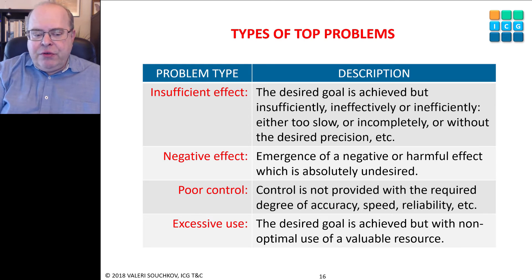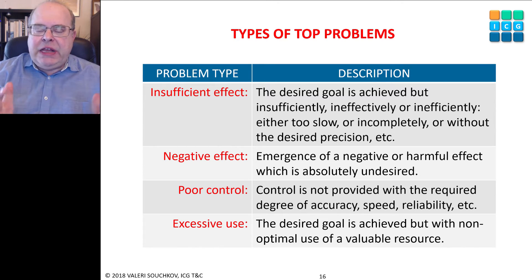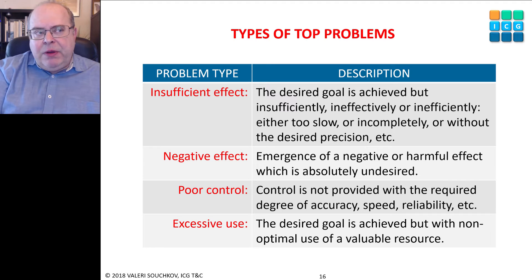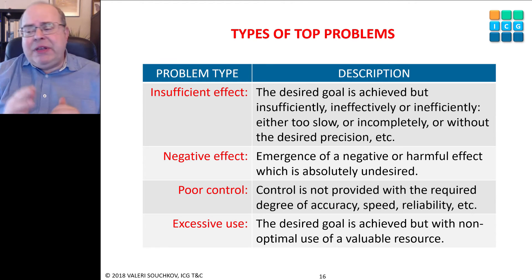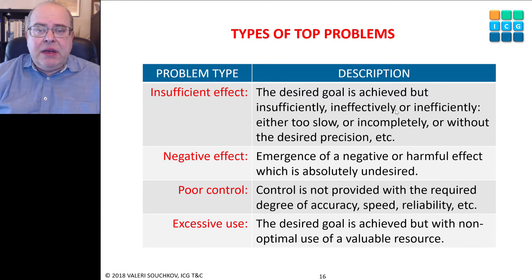Before I show an example of RCA+ and its principles, I need to explain what sorts of problems we deal with. The general problem placed at the top of an RCA+ diagram can be of four categories. First: insufficient effect — we want to produce something but it happens not exactly as we want. The desired goal is achieved, but insufficiently, ineffectively, or inefficiently — either too slow, incompletely, or without the desired precision.